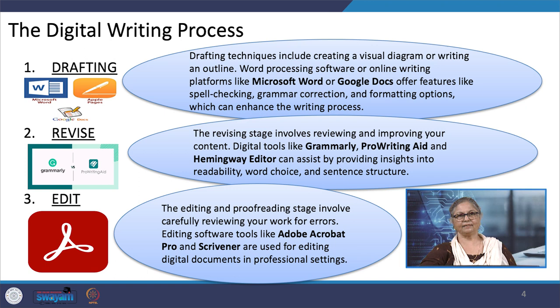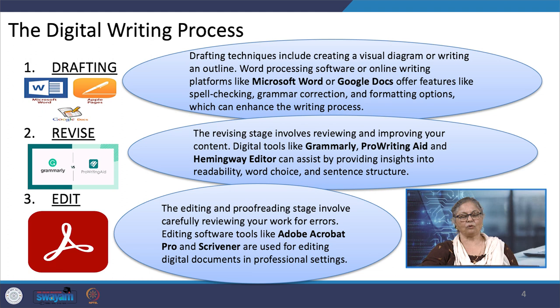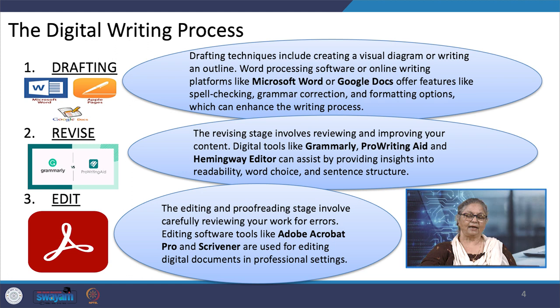Let us look at the writing process. The digital writing process incorporates drafting, revising, and editing. For drafting, there are platforms like Microsoft Word or Google Docs, which offer features like spell check, grammar correction, and formatting options. The revision stage also involves reviewing the structure from the point of view of grammar, and later from the perspective of presentation. Tools like Grammarly, ProWriting Aid, and Hemingway Editor can assist by providing insights into readability, choice of words, and sentence structures.